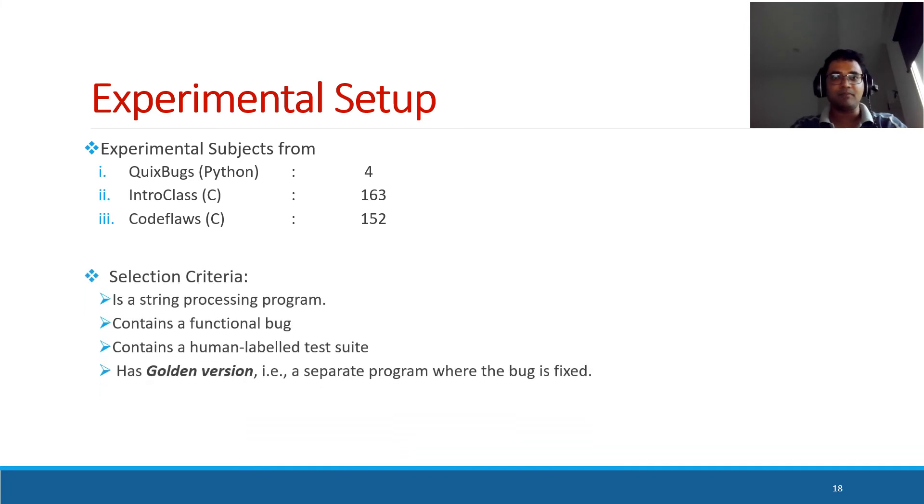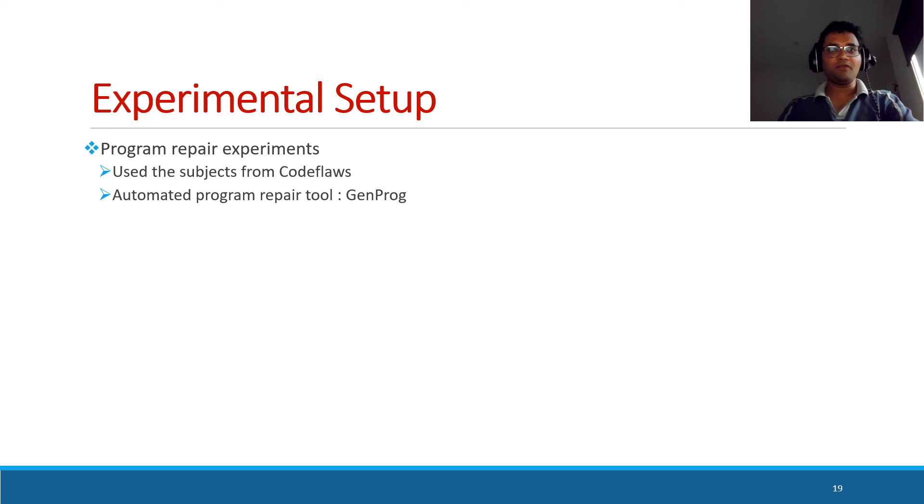When selecting these subjects, we considered programs processing strings and containing functional bugs. And also, for each subject, there is a human-labeled test suite. And the other thing is, for each subject, there is a golden version, that means a version where the bug is fixed. We use this version to simulate the human in experiments. For the program repair experiment, we use the subjects only from CodeFlaws because there is a separate repair validation test suite. And GenProg was used as the automated program repair tool.